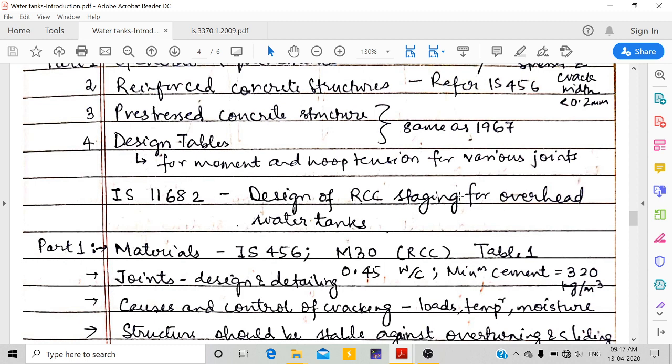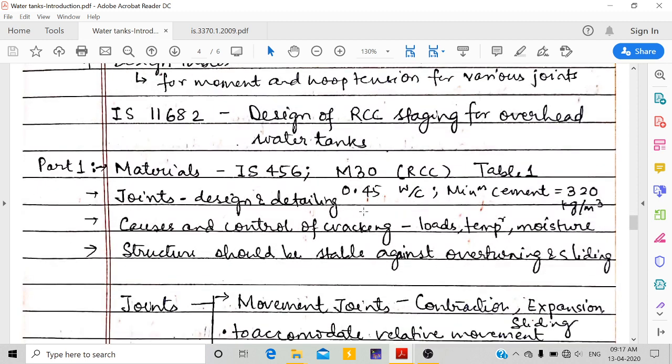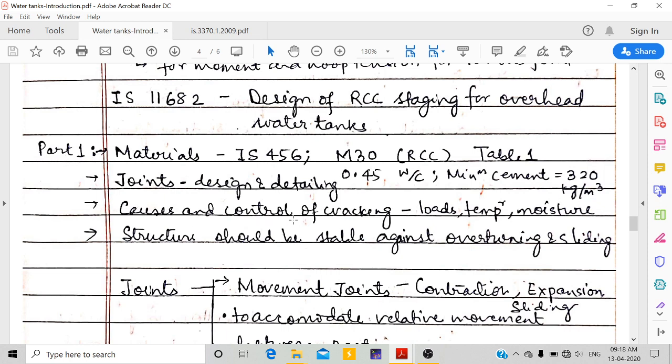In part 1, they have discussed different materials referring IS 456. They have preferred M30 concrete, but if it is a smaller tank you can go for M25. In table 1 of part 1, they have given water-cement ratio, minimum cement content. They have given design and detailing of joints, and causes and control of cracking.